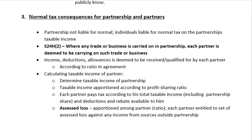In terms of Section 24H2, where any trade or business is carried on in partnership, each partner is deemed to be carrying on such trade or business. It is each of these partners who are deemed to carry on the business, and not the partnership itself. Any income, deductions, and allowances are deemed to be received by or qualified for by each partner according to their profit-sharing ratio. In order to calculate the taxable income of a partner, you first need to determine the taxable income of the partnership, and then this needs to be apportioned according to the profit-sharing ratio. Each partner then needs to pay tax according to his total taxable income, which includes the partnership share, any other income from other businesses, personal income, expenses, deductions, and any rebates available to him — primary, secondary, and tertiary rebates based on age, and also medical aid credit.